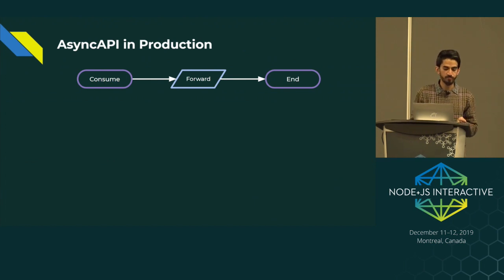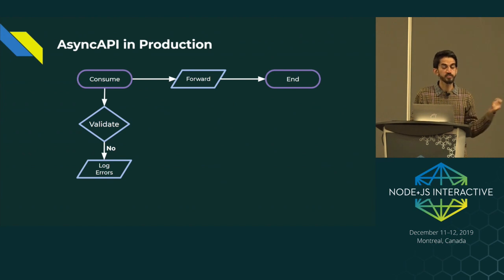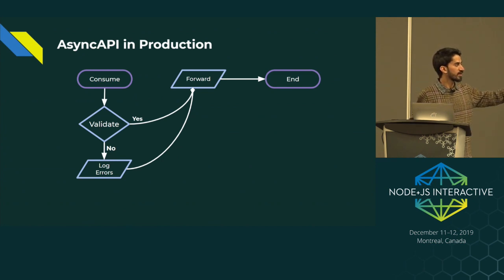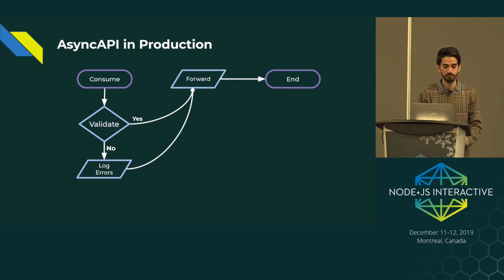The flow was like this: we consume the messages and previously forwarded them directly to the relative service. When we started using Async API, we added a validation step. If there's no error and the message schema is right, we forward it. If it's not valid, we just log the errors — but don't fail it or send an error back to the client — and still forward it to the service. This made it easy for us to adopt the schema inside our production environment gradually.